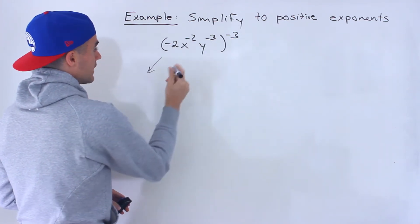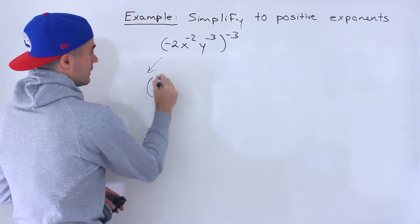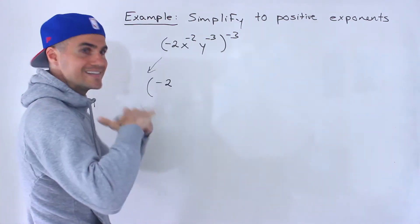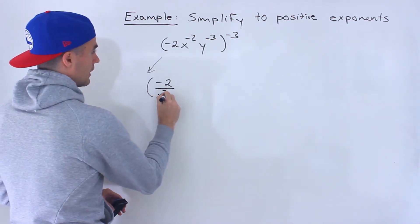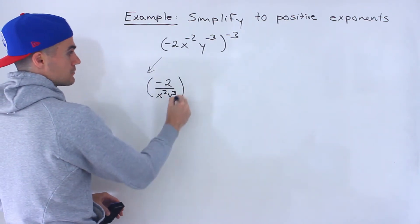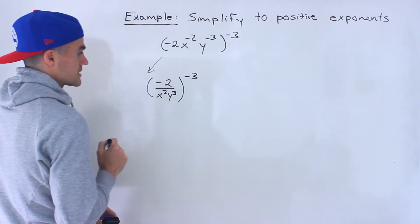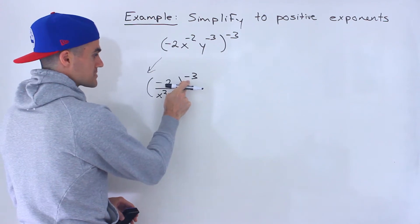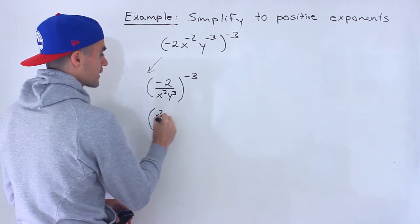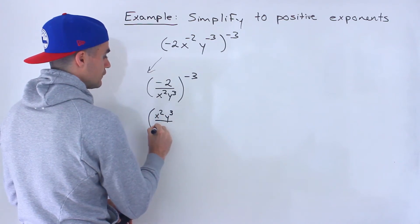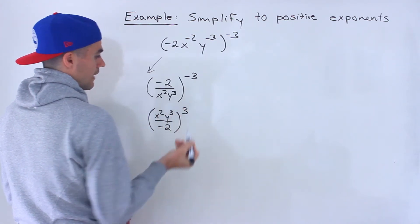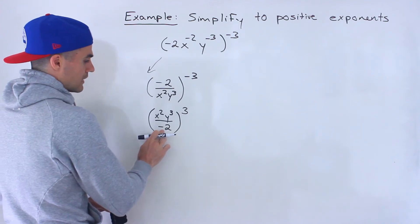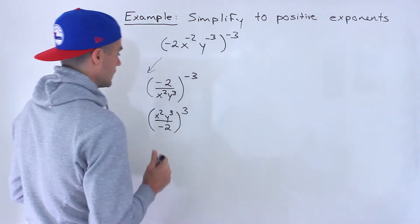Notice we have x to the negative 2 and y to the negative 3. So we can take this bracket — the negative 2 would stay up top, but x to the negative 2 and y to the negative 3 we can bring down to the denominator, which changes them to positive exponents. We'd still have that negative 3 outside. When you have a fraction to a negative exponent, you can flip the fraction and the exponent becomes positive. I'll just keep the negative in the denominator for now and put it in the numerator at the end.